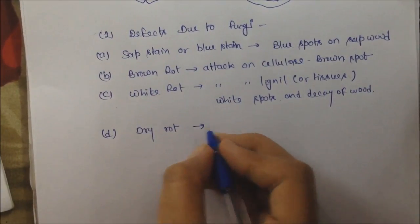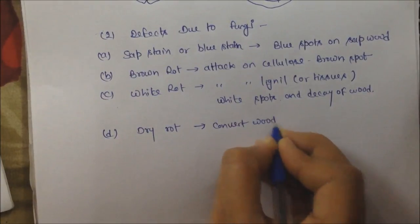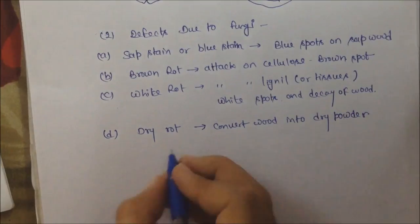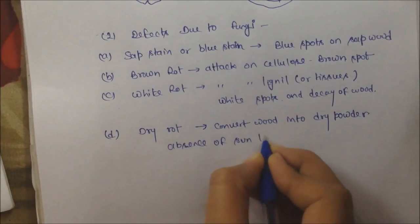Next is dry rot. It occurs in the absence of sunlight and dampness and fungi convert wood into dry powder. That is called dry rot.